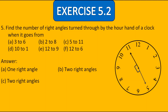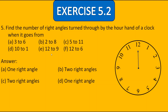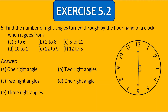In D, first it was on 10 and it reached at 1 — clearly making one fourth of the revolution, meaning one right angle. In E, it was on 12 and reached at 9 — it is making three right angles. The answer for E is three right angles. In F, it was on 12 and reached at 6 — that is half of a revolution, meaning two right angles.